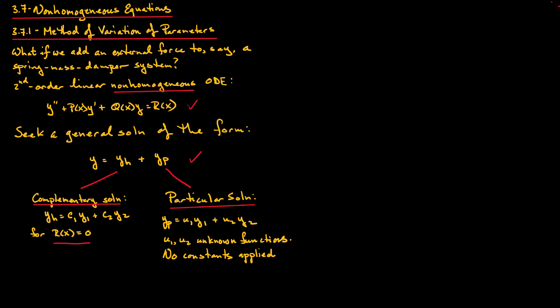The first equation will be obtained by requiring that YP satisfies the non-homogeneous ODE. To do this, we will need some derivatives. The first derivative of YP, using the product rule, gives us U1'Y1 + U1Y1' + U2'Y2 + U2Y2'.